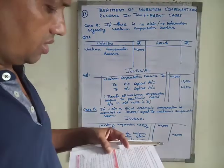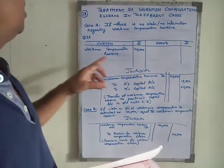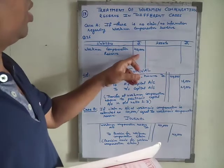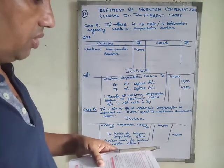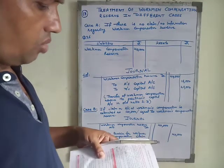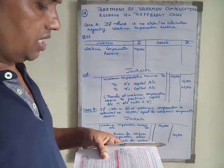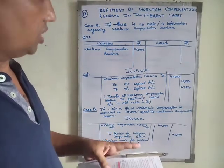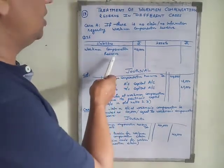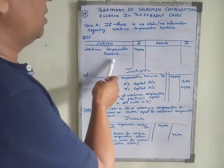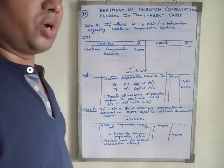In this question there is no claim. The given balance sheet shows workman compensation reserve of 40,000 on the liability side. The accounting treatment here is that this 40,000 is distributed to partners, as workman compensation reserve is part of the profit.